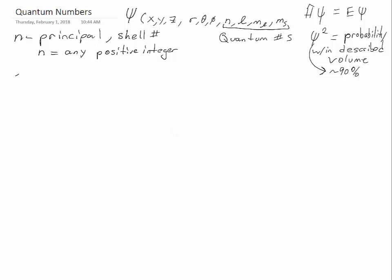The second quantum number, l, is the azimuthal quantum number, which is associated with angular momentum. But this is the type of orbital, and l can be any number from 0 up to n minus 1, sticking with integers.